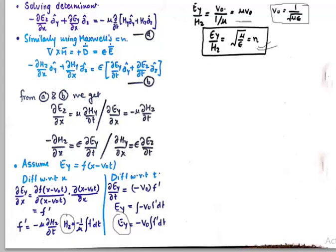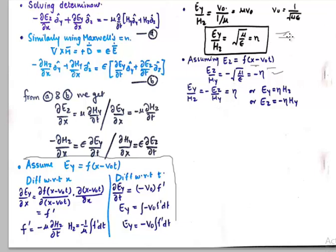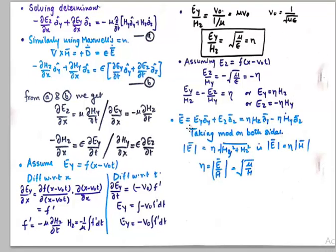That is how we derive the characteristic impedance of the wave in any medium. If we assume E_Z again to be a function of x and t and repeat all the steps, we get E_Z / H_Y = −√(μ/ε) = −η. So from the first equation E_Y / H_Z = η, and from the second E_Z / H_Y = −η. Therefore: E_Y = η·H_Z and E_Z = −η·H_Y.